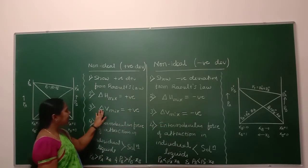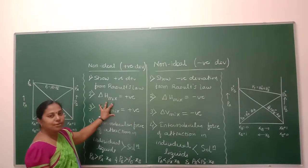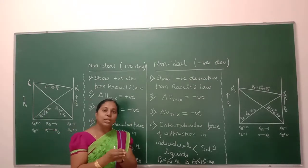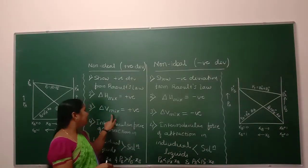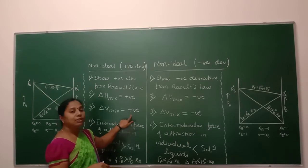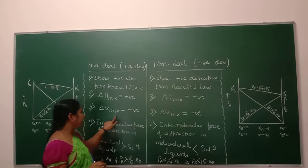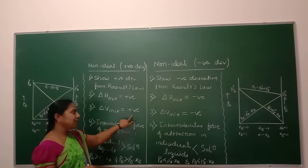The third difference: delta V of mixing is positive for non-ideal with positive deviation. During the mixing of the two liquids to form a solution, the volume of the solution obtained increases. There is an increase in volume upon mixing of the two liquids to form a solution. Hence, delta V of mixing is positive.